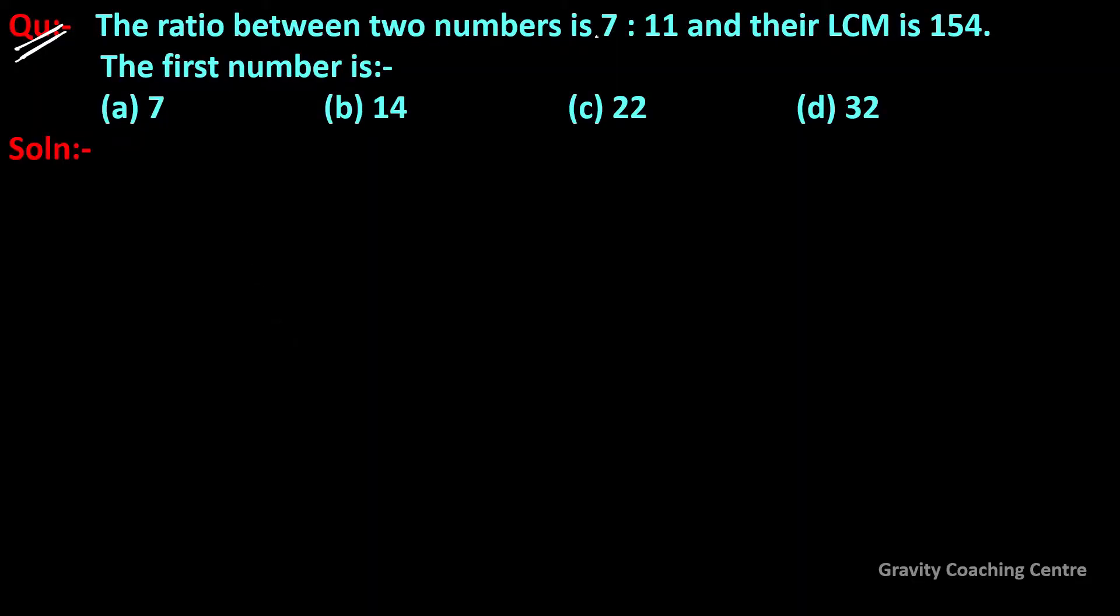The question: the ratio between two numbers is 7 to 11 and their LCM is 154. The first number is? In this question, given that the ratio is 7 to 11, we let the two numbers be 7x and 11x. According to the question, their LCM is given as 154.